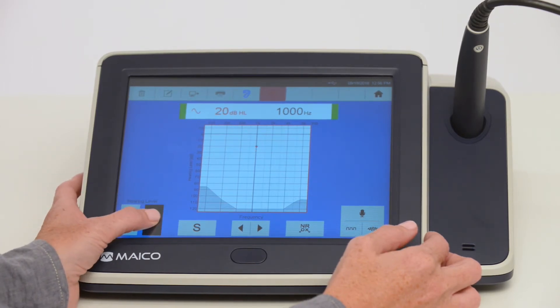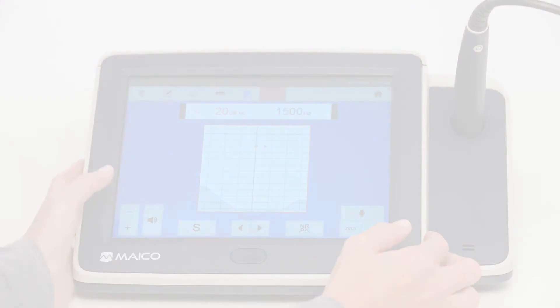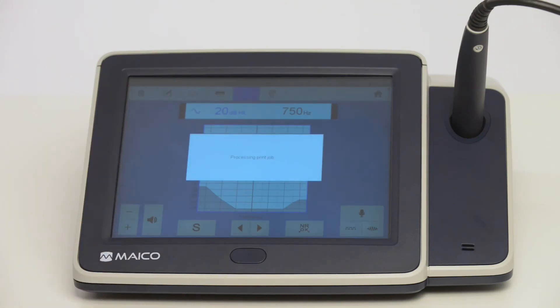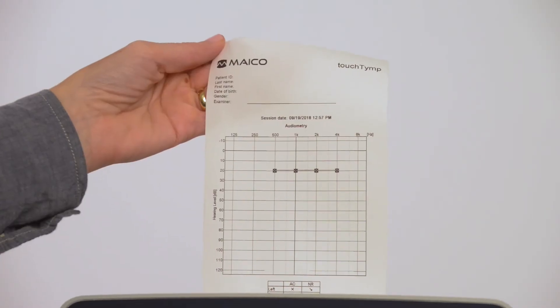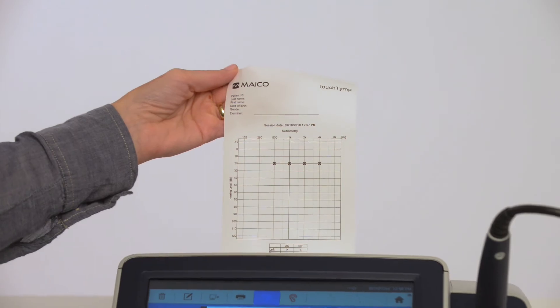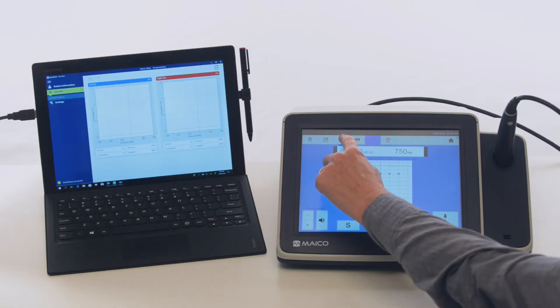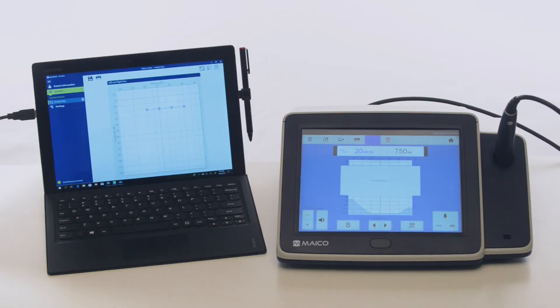Results can be stored on the device by pressing the S button. Final testing results can be printed by selecting the print button or transferred to a PC by pressing the transfer button. Transfer requires the TouchTimp be connected to a PC with the Mako software open.